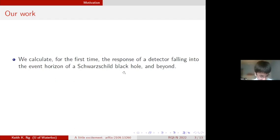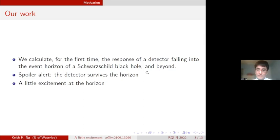We can ask, does this detector detect Hawking radiation particles? What happens at the horizon as the detector crosses? In this paper we calculated for the first time the response of a detector falling into the event horizon of a Schwarzschild black hole and beyond. I'm sure most of you will not be surprised to hear that the detector does survive the horizon. However, there is a little excitement that does occur at the horizon.